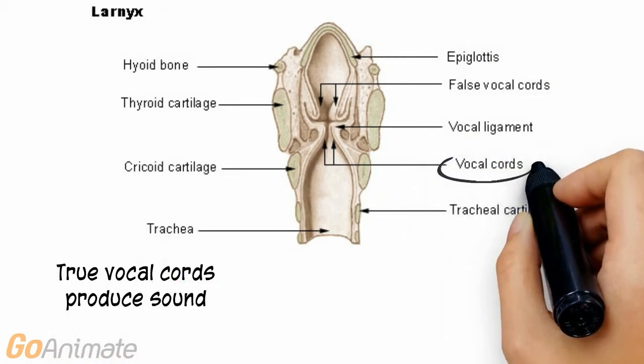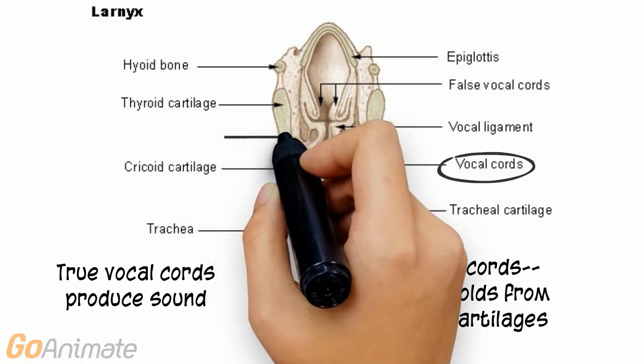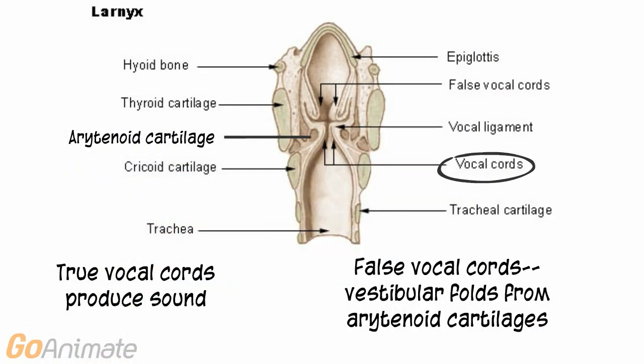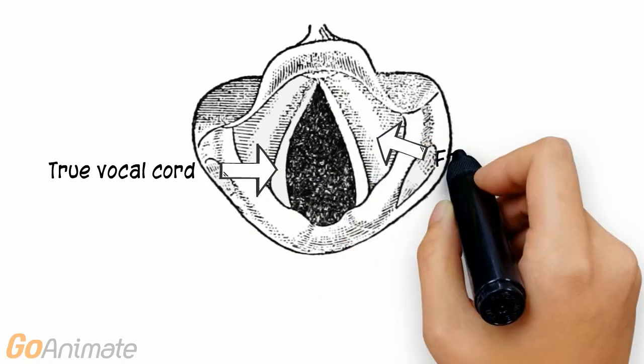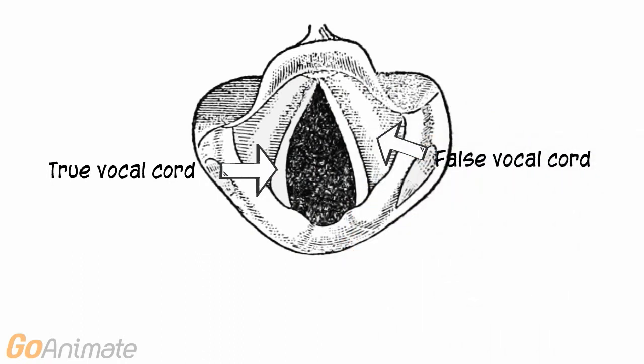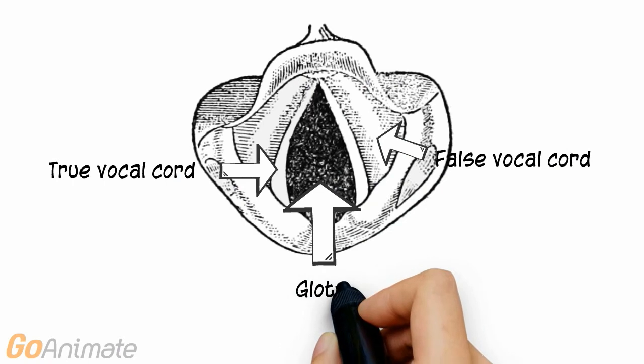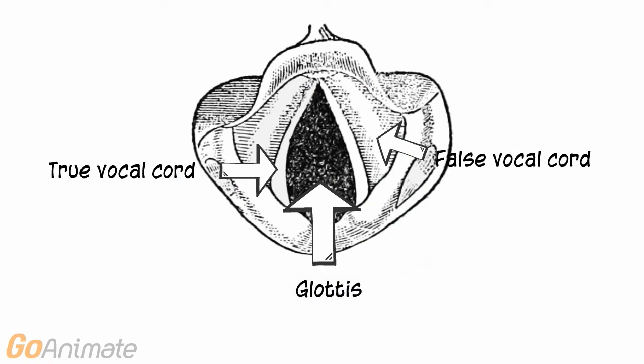We can also see the vocal cords. The true vocal cords produce sounds. The false vocal cords, or vestibular folds, are membranes extending from the arytenoid cartilages. Here is a close-up of the vocal cords. We can see the true and false vocal cords along with a triangular space called the glottis, which forms when the vocal cords are relaxed.